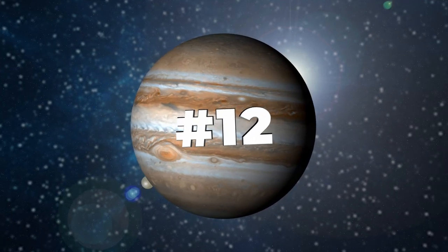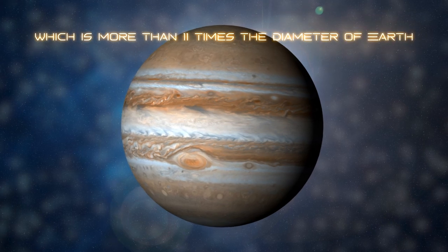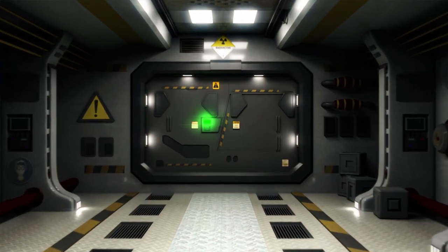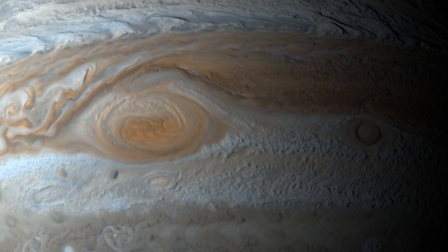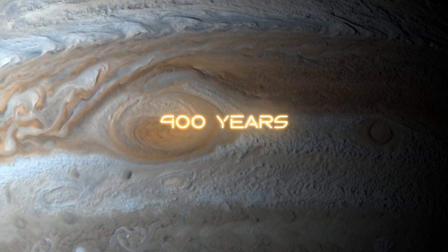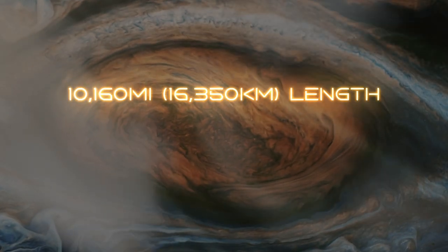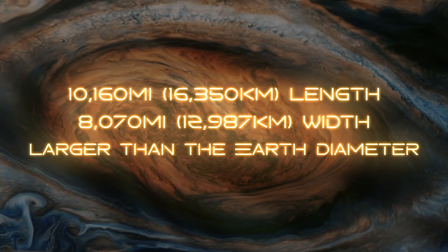Number 12. The largest planet in our solar system is Jupiter, which is more than 11 times the diameter of Earth. Number 13. The great red spot on Jupiter is a gigantic storm that's been raging for at least 400 years. With a length of about 10,160 miles and a width of about 8,070 miles, it's larger than the Earth's diameter.